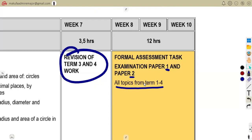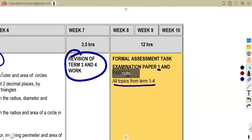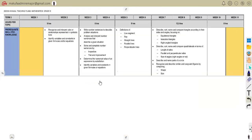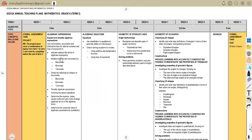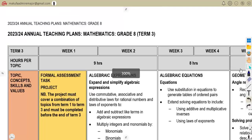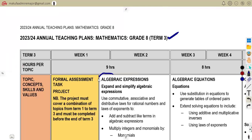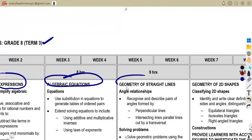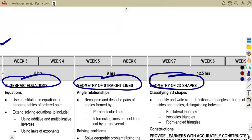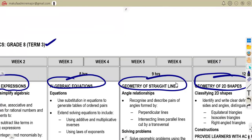As I'm talking about term three, when they say refer back to term three, you're supposed to revise your algebraic expressions, your algebraic equations, geometry of straight lines, and geometry of 2D shapes. That's what they're saying when they mention term one to term three.